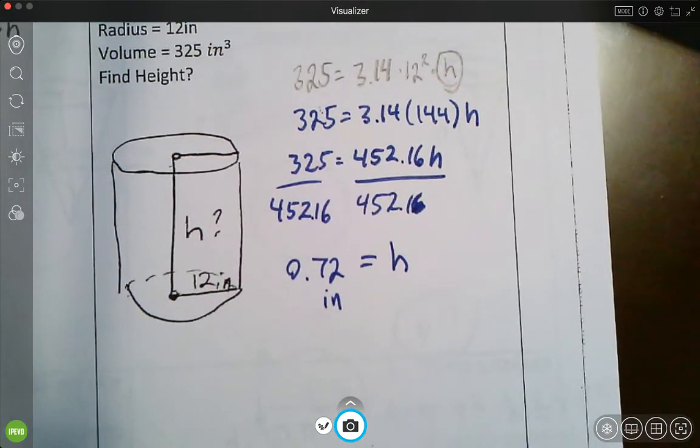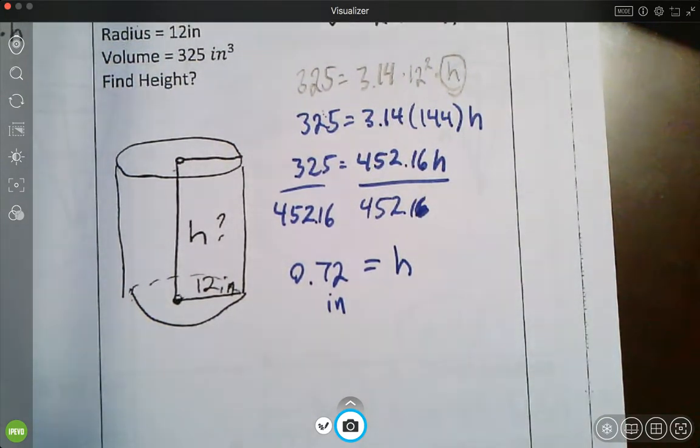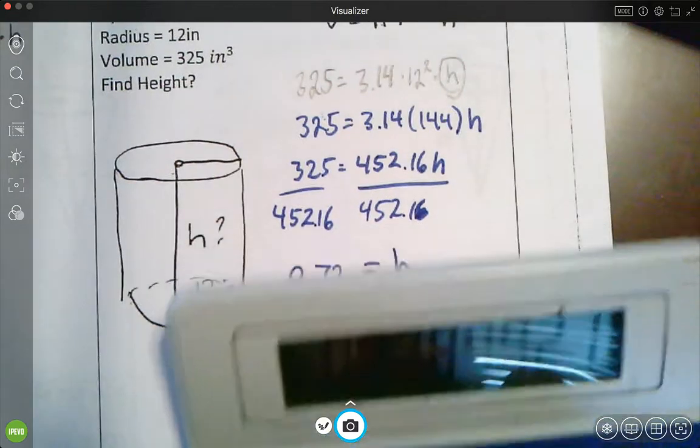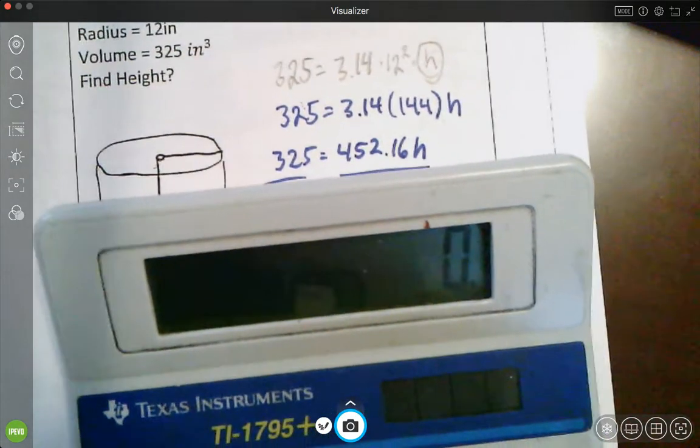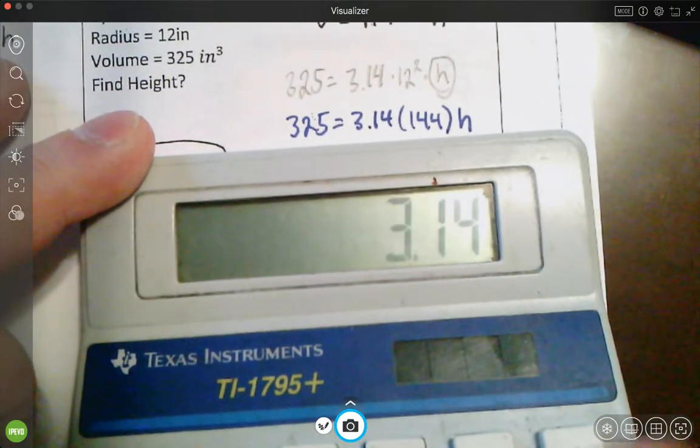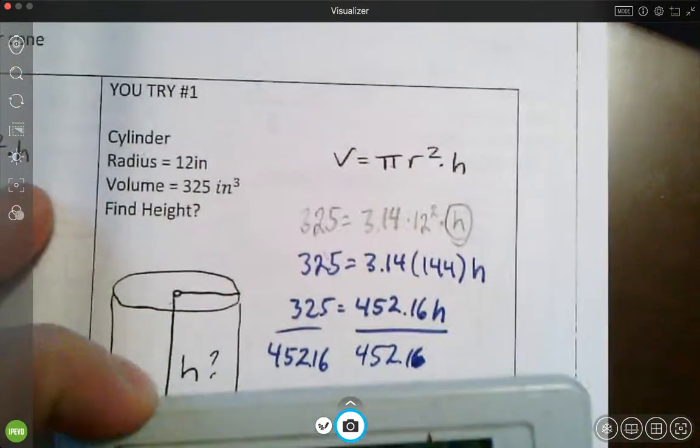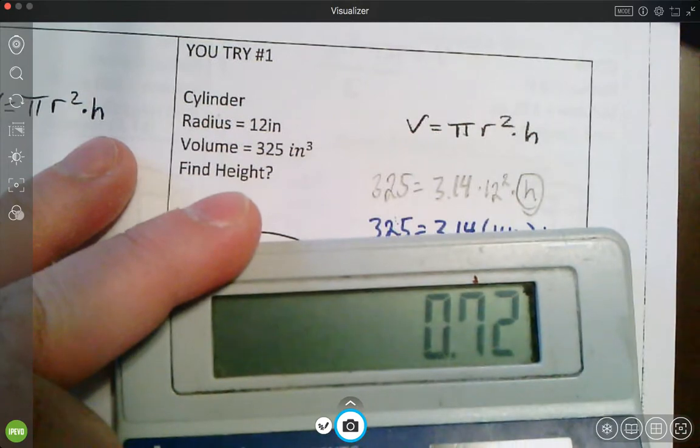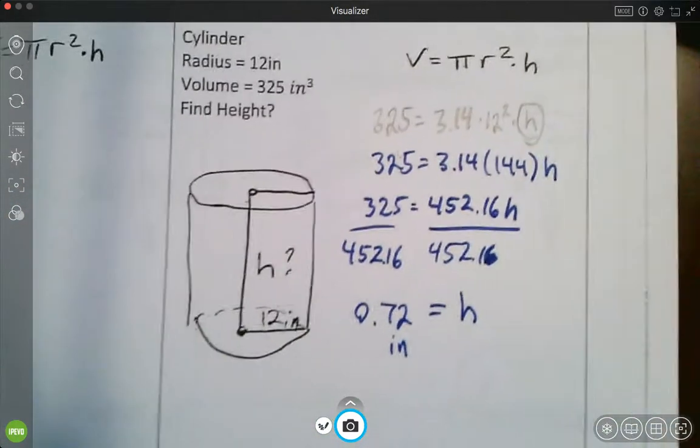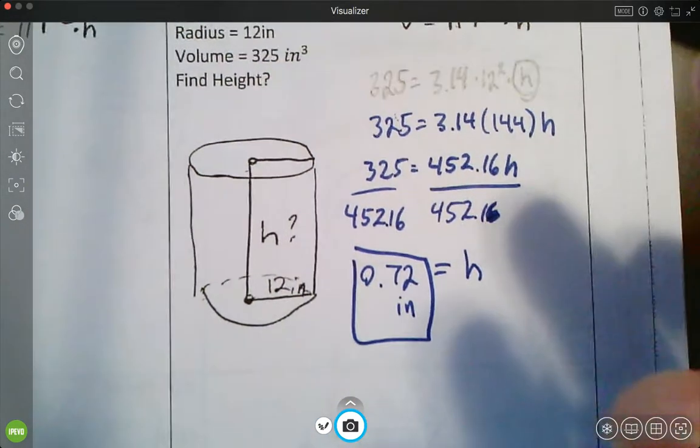So maybe that's just, probably that volume should have been bigger for that one. But if I do it backwards, it should work. So if I do the formula and I put 0.72 in for the height, it should work. So just to prove it to you, 3.14 times 12 times 12 times, what was it again, 0.72? Yeah, that's 325. So that was just a bad problem. But again, the correct answer is almost three quarters, just about three quarters of an inch for that one.